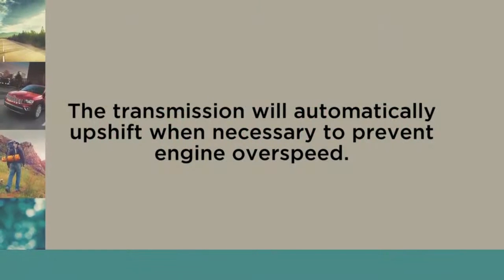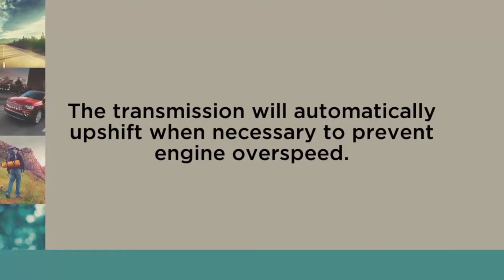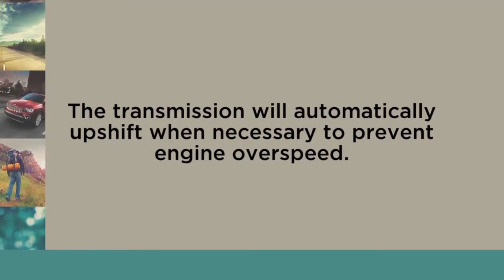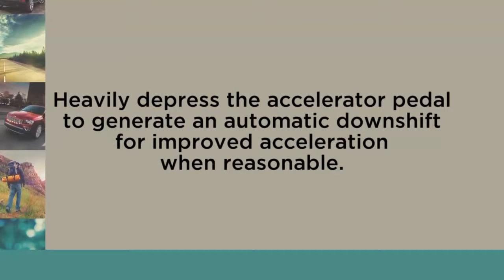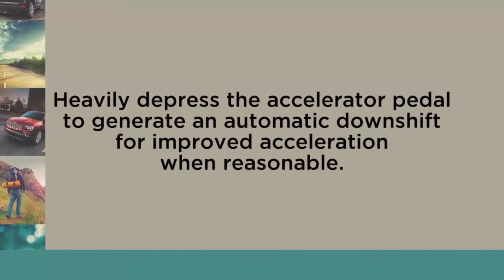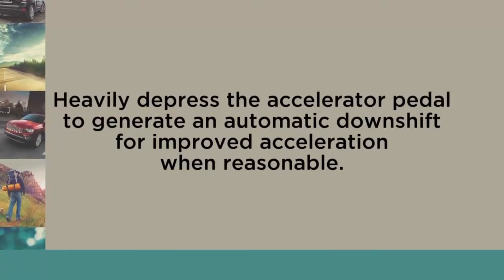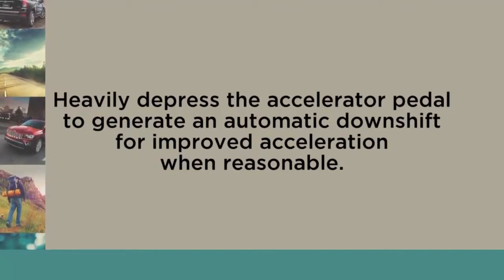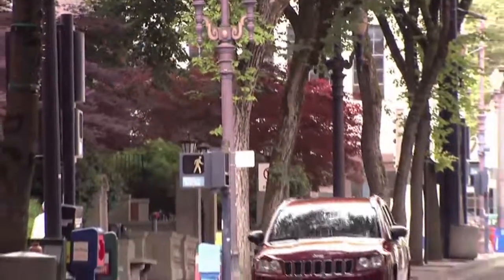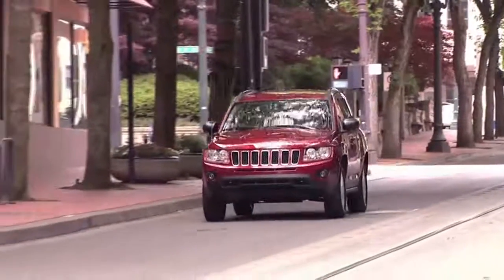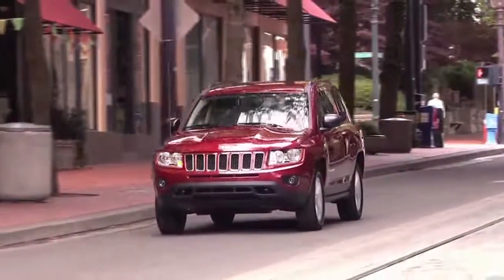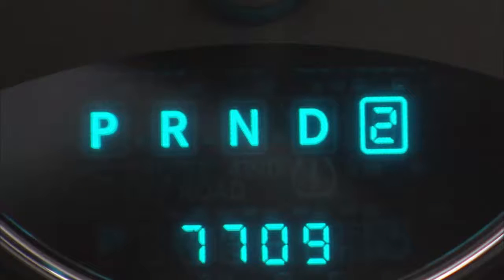Keep this in mind though: the transmission will automatically upshift when necessary to prevent engine overspeed. Heavily depress the accelerator pedal to generate an automatic downshift for improved acceleration when reasonable. The transmission will automatically downshift as the vehicle slows to prevent engine lugging and will display the current gear.